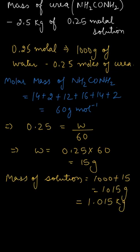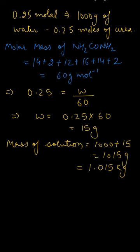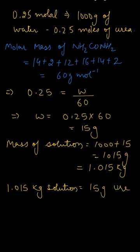So now it means that 1.015 kg of the solution contains 15 grams of urea. Now we have to calculate for 2.5 kg. So from here we can calculate that 1.015 kg solution has 15 grams of urea. So for 2.5 kg solution, that would be 15 divided by 1.015 multiplied by 2.5.